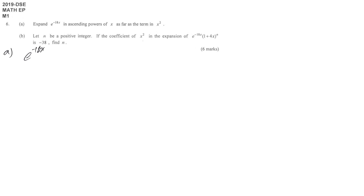So e^(-18x) is equal to 1 plus something divided by 1 factorial plus something squared divided by 2 factorial until x squared only. So the rest we just use dot dot dot. And then just fill in the blank. And then part of ascending power check once again. This is ascending power and then we finish part A.